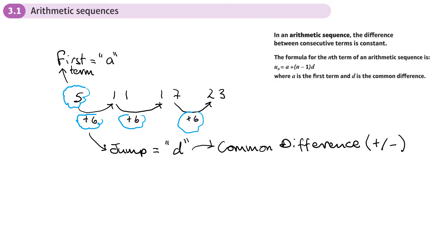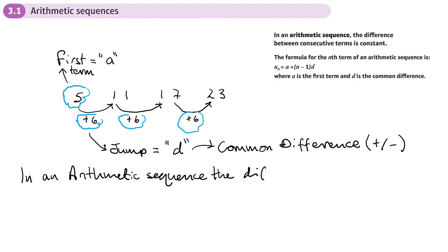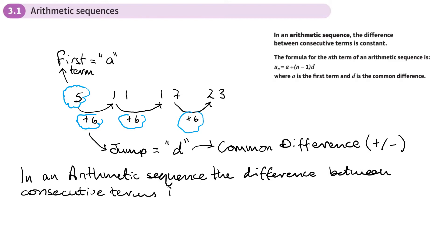It is an arithmetic sequence if this difference is constant. If the difference is changing, it's not arithmetic. In an arithmetic sequence, the difference between consecutive terms is constant, and we refer to that constant difference using the letter d.